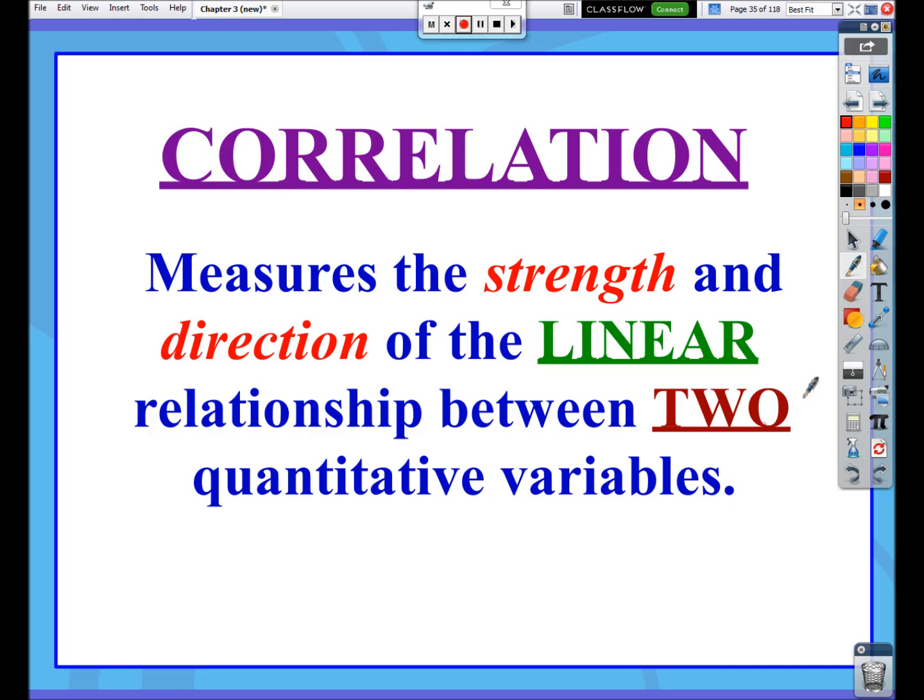Correlation only measures the strength and direction of linear relationships. So if we have a scatter plot that is clearly not linear, it's one of those curved examples that we talked about previously, then correlation really is not going to apply to that non-linear relationship. It only applies to linear relationships.